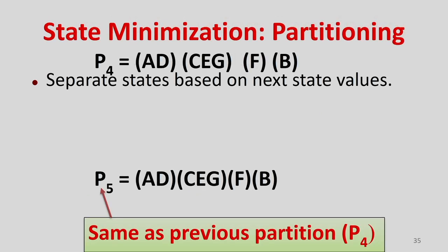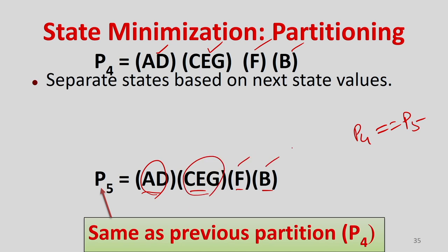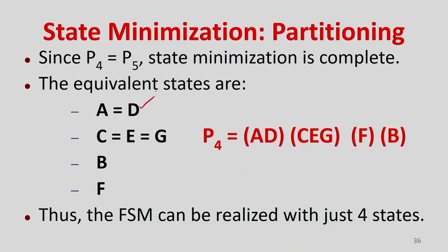Separating states based on next state, the current partition is {A, D}, {C, E, G}, {F}, and {B}. No further partition is possible — P4 equals P5. This means A and D are equivalent, C, E, and G are equivalent, B is unique, and F is unique. This FSM can be realized with 4 states instead of the original 7.